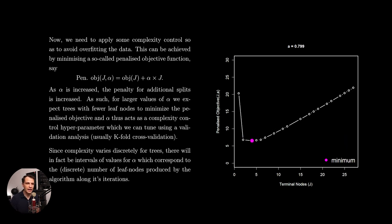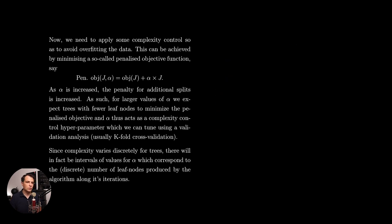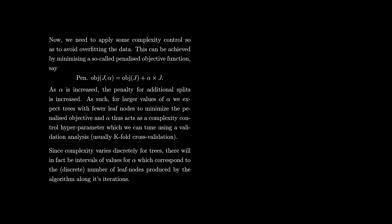As alpha is increased, the penalty for additional splits in the tree is also increased. So for larger values of alpha, we actually expect trees with fewer leaf nodes to minimize this penalized objective function. Alpha thus acts as a complexity control hyperparameter, which we can tune using validation analysis, usually k-fold cross-validation. Since complexity varies discretely for trees, there will be intervals of values for alpha which correspond to the discrete number of leaf nodes produced by the algorithm.